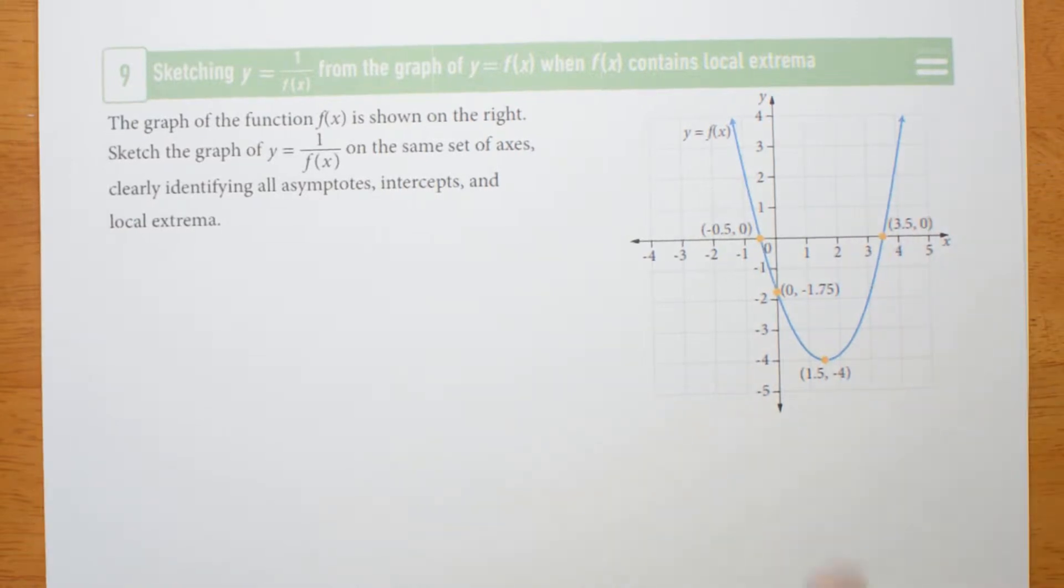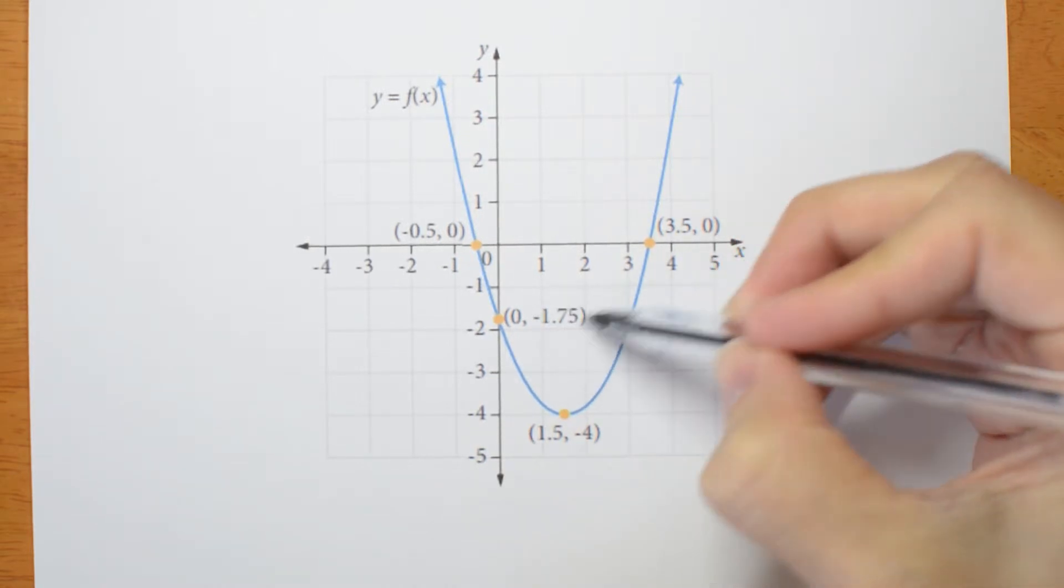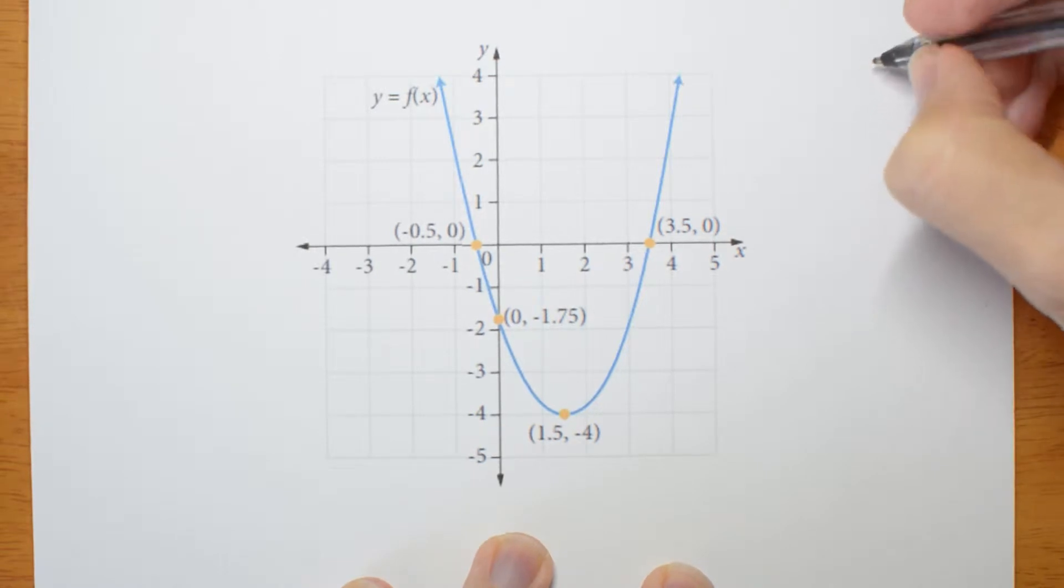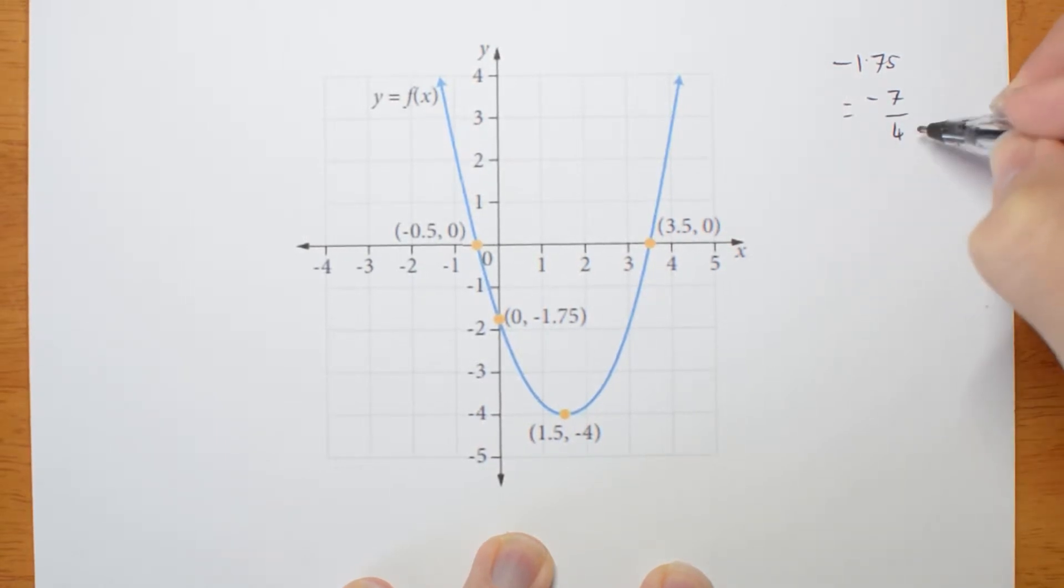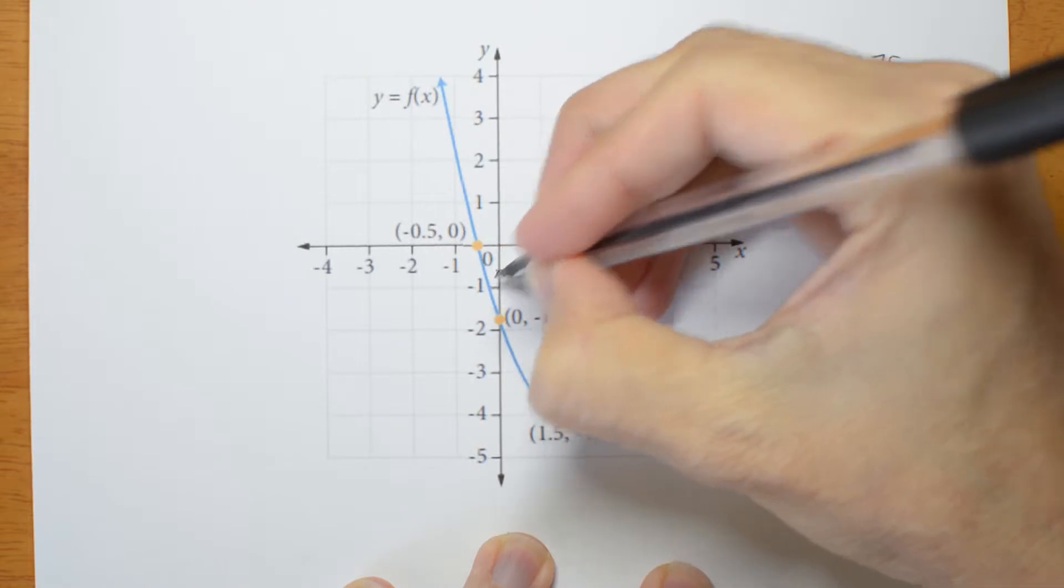Let's try drawing the reciprocal of this graph. So, let's start with the y-intercept. The original function has a y-intercept at negative 1.75. Well, negative 1.75 is negative 7 on 4, because it's 1 and 3 quarters. So the reciprocal is going to be negative 4 sevenths. So it's going to cross about here.